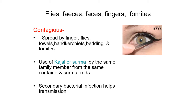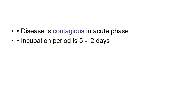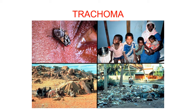You can remember the transmission factors as: flies, fishes, feces, fingers, and fomites. It is a contagious disease spread by fingers, flies, towels, handkerchiefs, bedding, and fomites, including shared kajal or surma containers. Secondary bacterial infection helps transmission. The disease is contagious in the acute phase and the incubation period is 5 to 12 days.